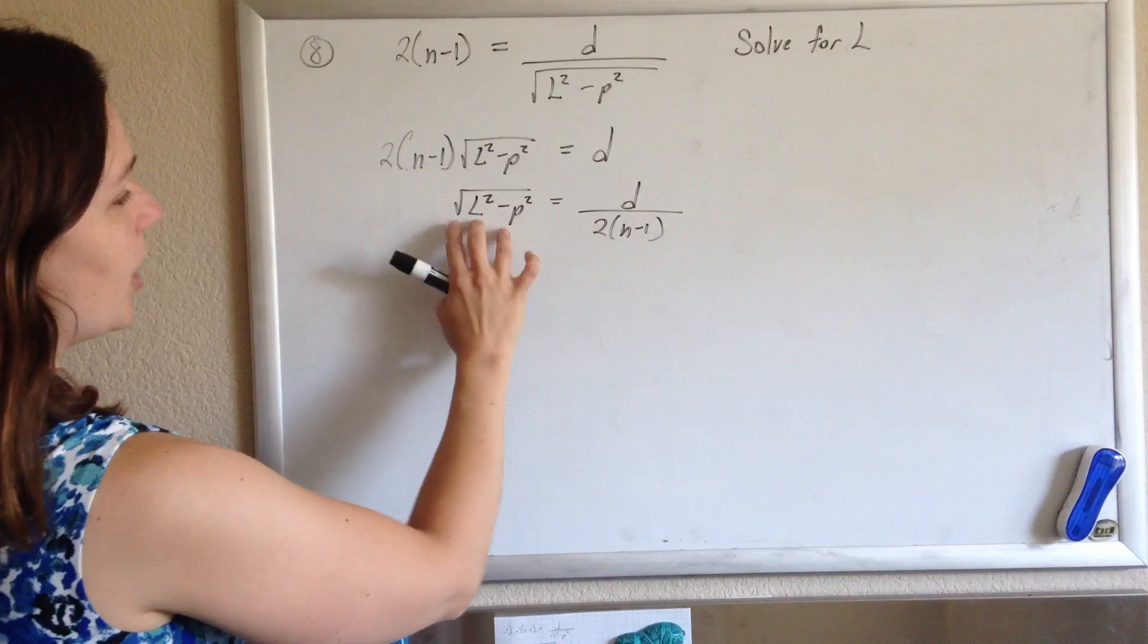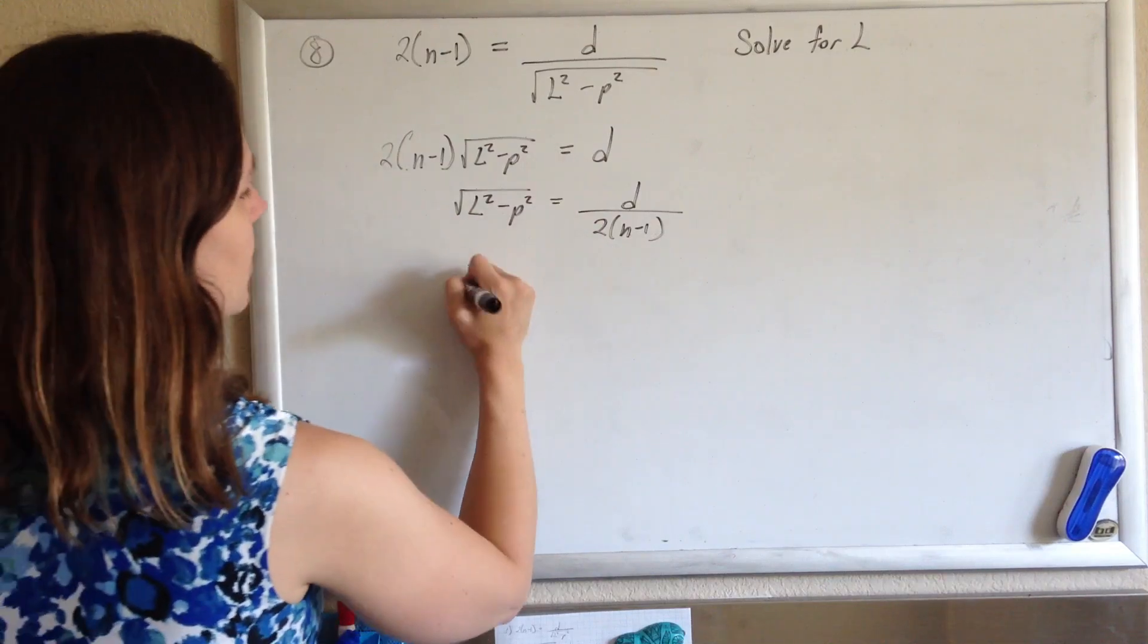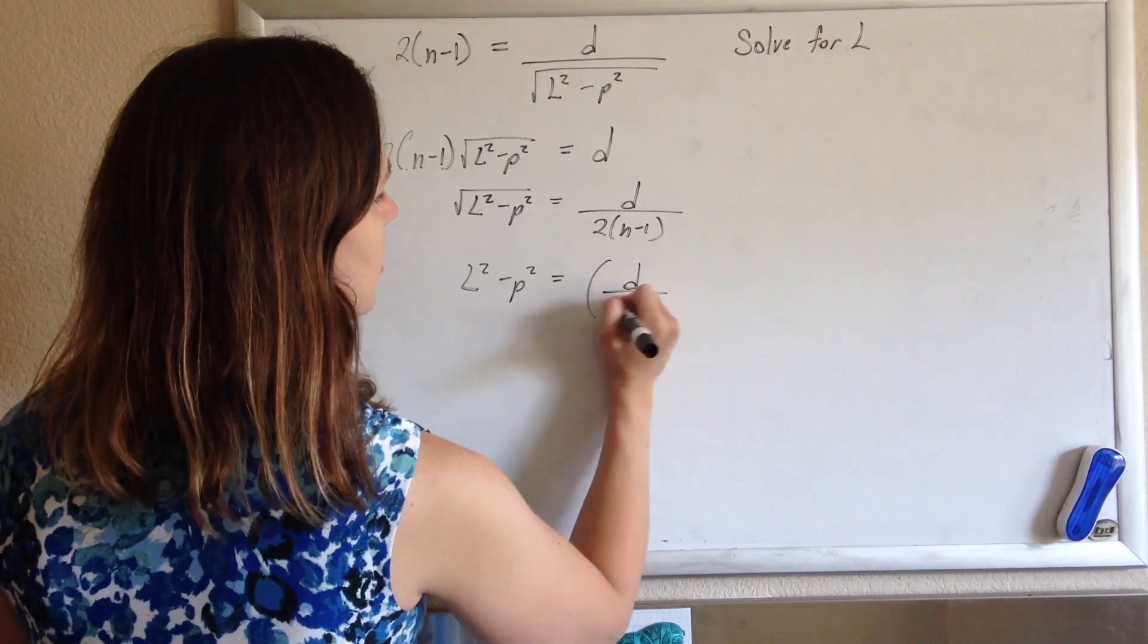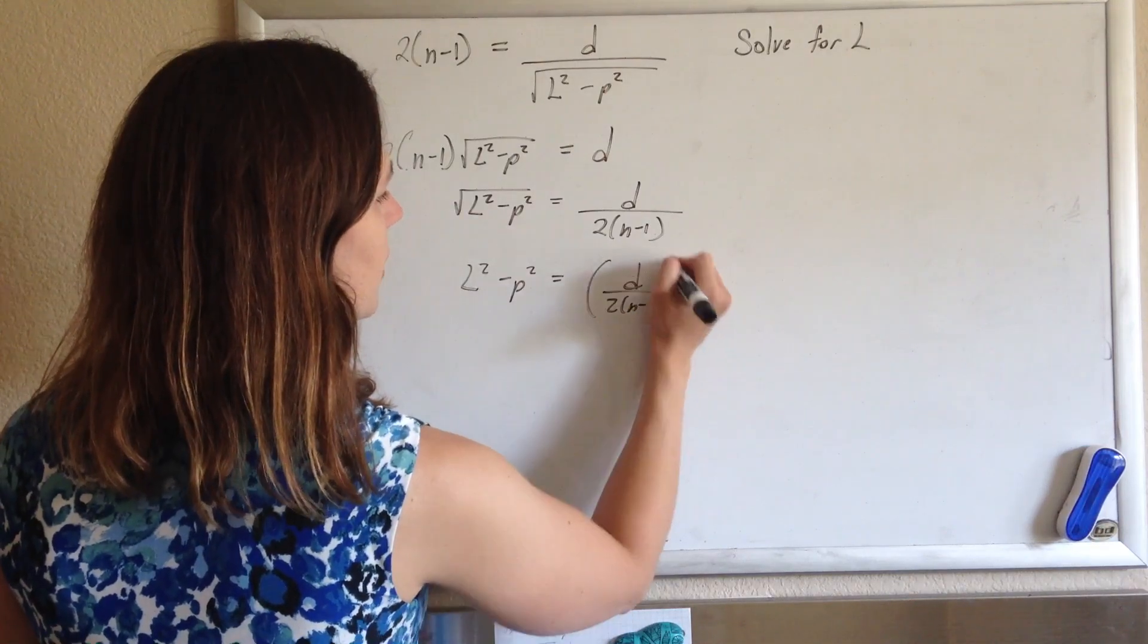I'll undo the square root now by squaring both sides. So I'll get L squared minus P squared equals D over 2 times n minus 1 squared.